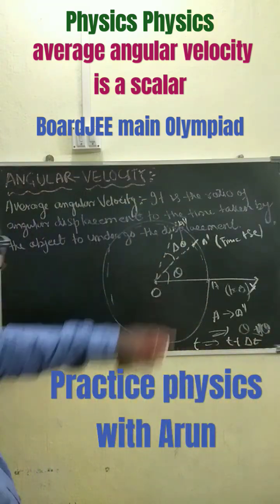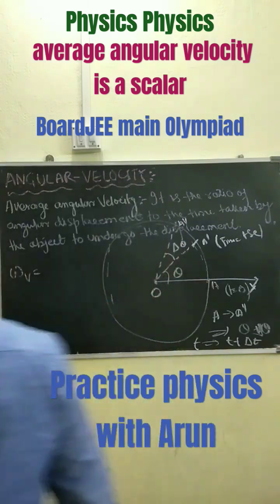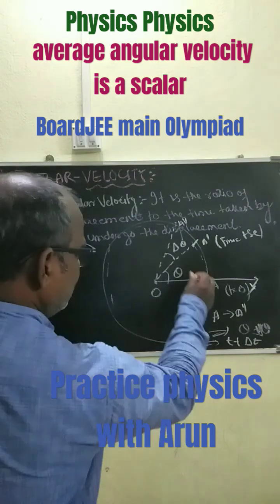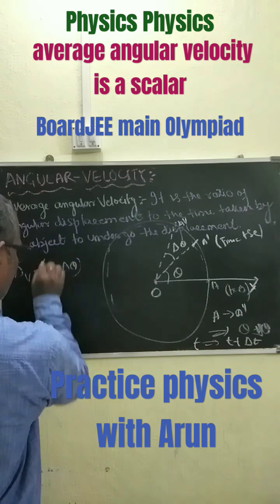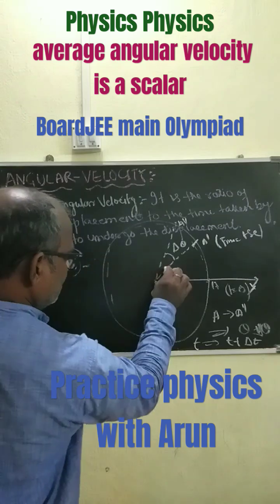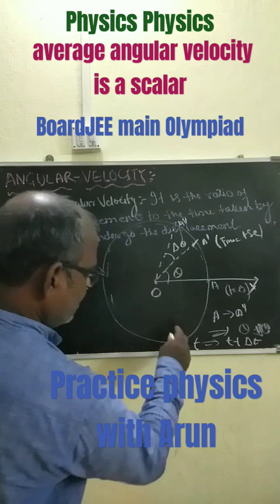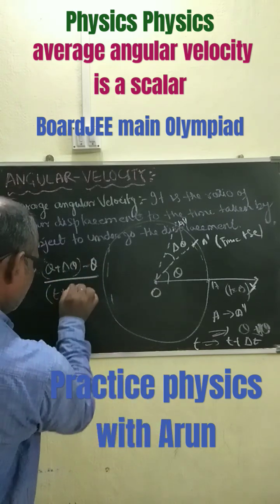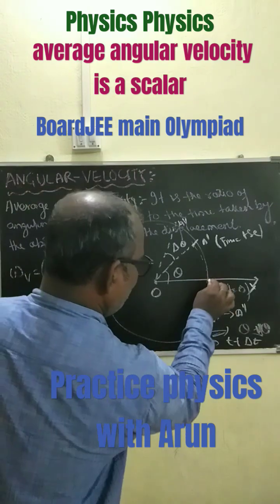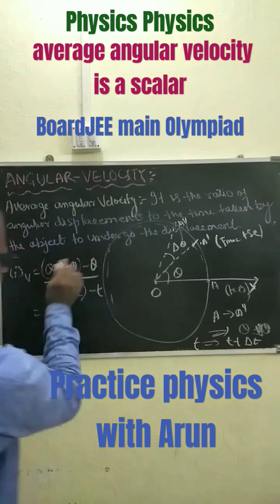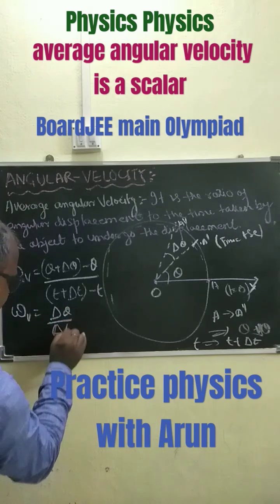The average angular velocity equals the change in angular displacement, which is (theta + delta-theta) minus theta. This simplifies and cancels to give us omega equals delta-theta divided by delta-t.